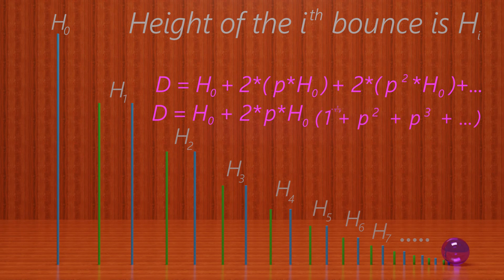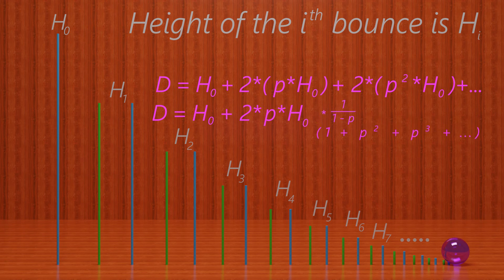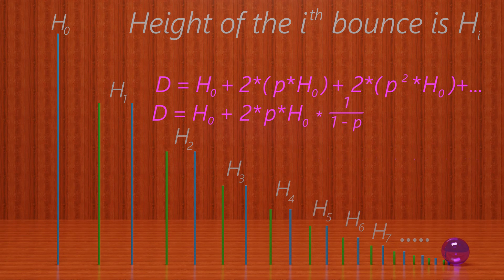We can substitute that in, and we can get that D is equal to H0 plus 2p H0 times 1 over 1 minus p.